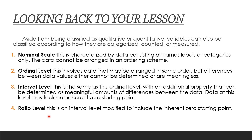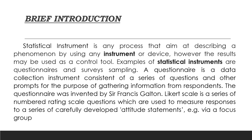The ratio level is an interval level modified to include an inherent zero starting point. A statistical instrument is any process that aims at describing a phenomenon using any instrument or device. The results may be used as a controlled tool. Examples of statistical instruments are questionnaires and survey sampling.